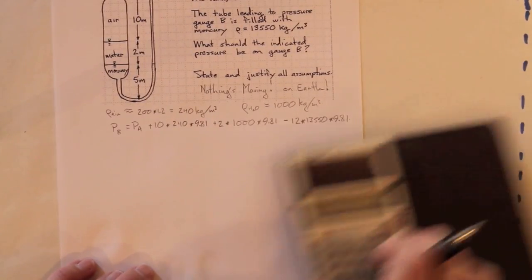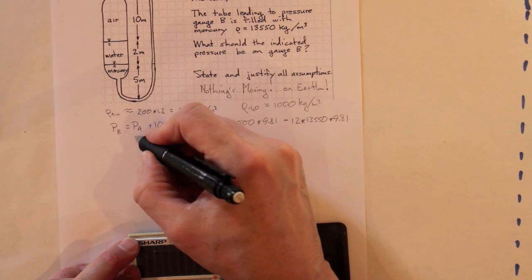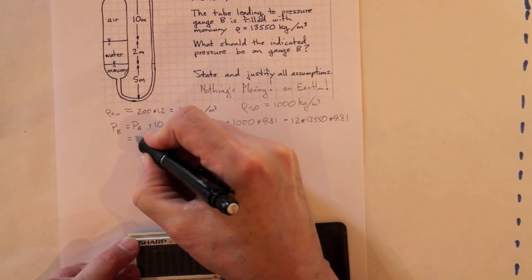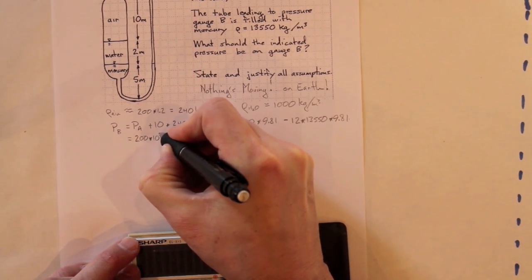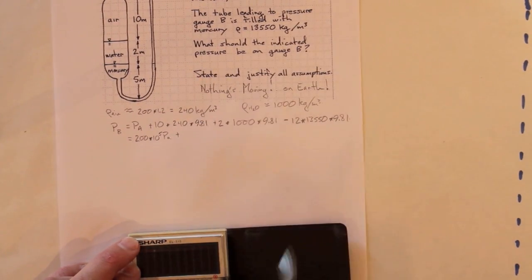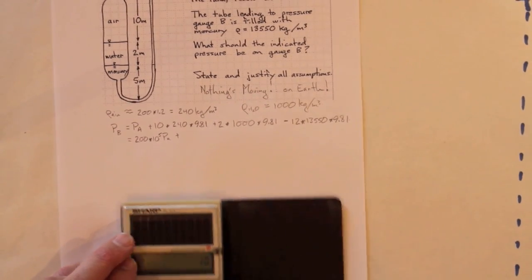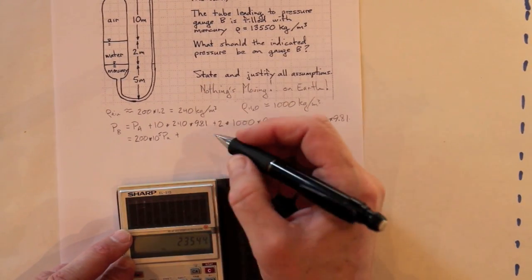So, I'll get my calculator, plug everything in. The pressure at A is 200 bar. So, that's 200 times 10 to the fifth Pascals plus 10 times 240 times 9.81 is 23,544.